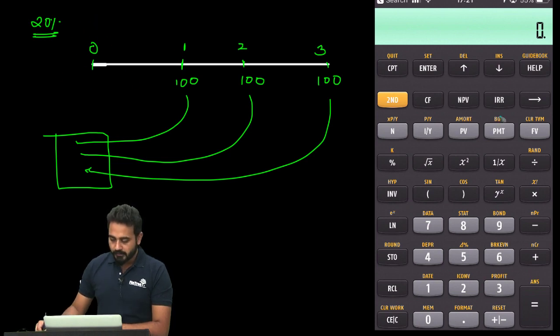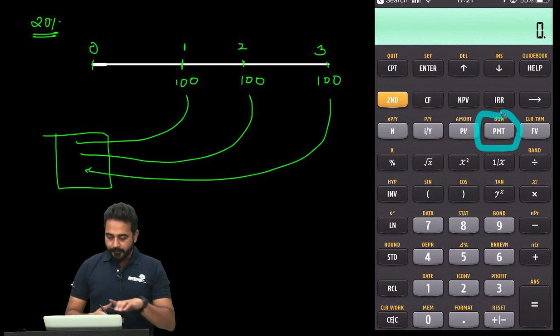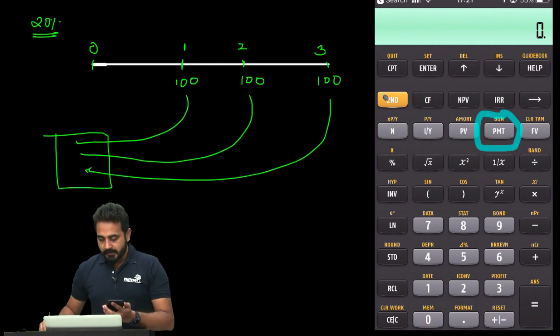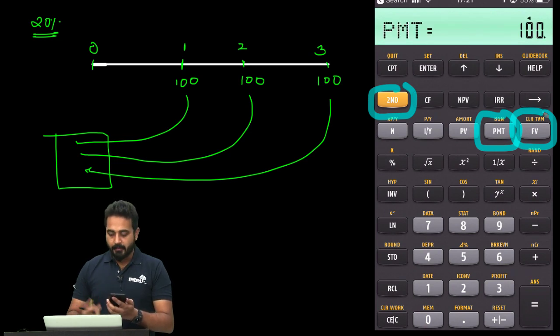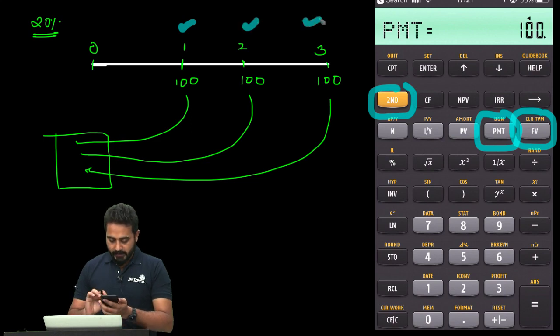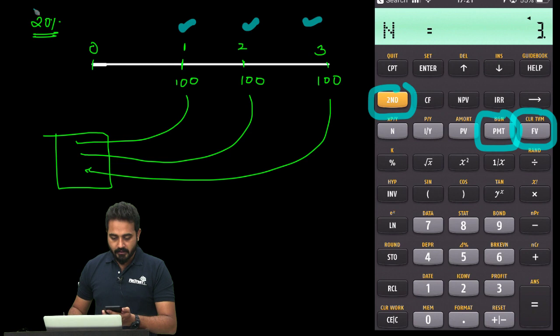Here is how this is done: First, press Second and then Clear TVM. Then enter 100 PMT—that's the payment button. How many times are we receiving payment? One, two, three, so 3 N. What's the discount rate? 20%, so 20 IY.